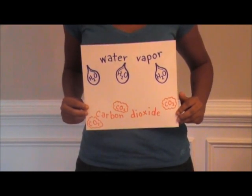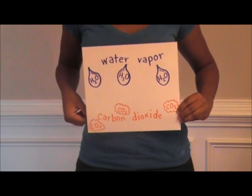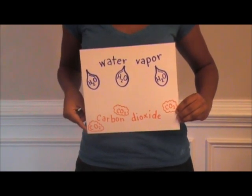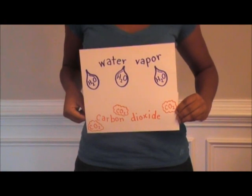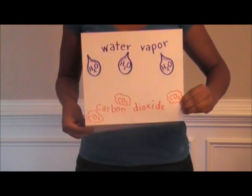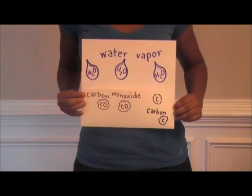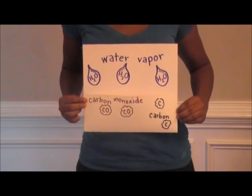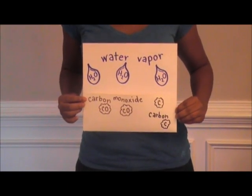In incomplete combustion, the limited amount of oxygen prevents the fuel from reacting completely to form carbon dioxide and water. Instead, carbon monoxide and/or carbon form. These products are toxic and are considered to be pollutants. Now that we've learned about the reactants and products in a combustion reaction,